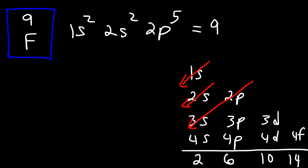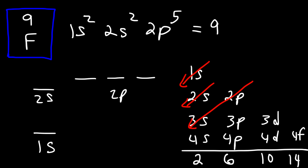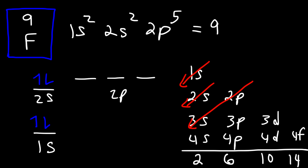Now we need to write the orbital diagram. S has 1 orbital, and P has 3 orbitals. Each orbital can hold up to 2 electrons. Based on the Aufbau principle, we fill up the lower energy levels first. When we get to the 2P sublevel, there are 3 orbitals with the same energy — these are degenerate orbitals. According to Hund's rule, we add electrons one at a time with parallel spins, and then pair them up afterward.